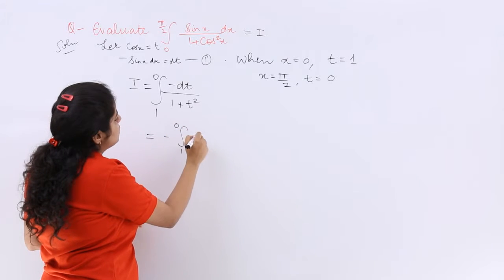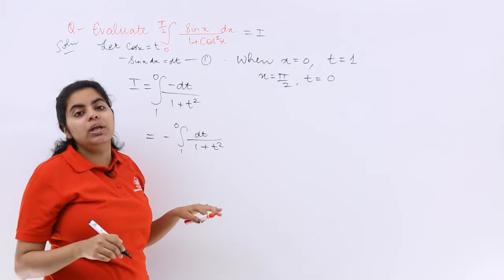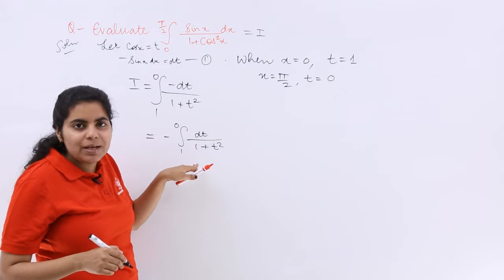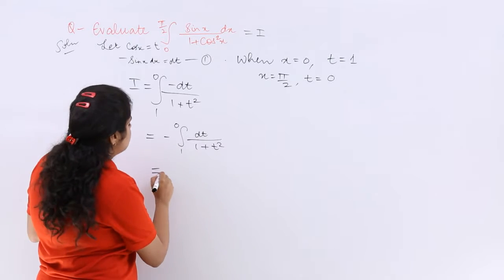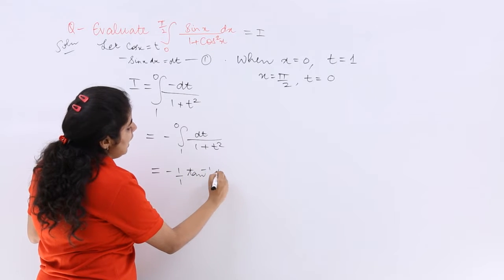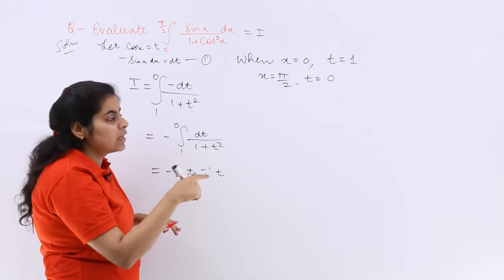Now see, I take minus common, so again 1 to 0 dt upon 1 plus t². I told you formulas are important. So 1 plus t² or t² plus 1. So it becomes minus 1/a tan⁻¹(x/a) plus c earlier in indefinite. But here it is limits, so no need of plus c.